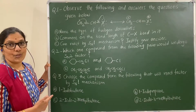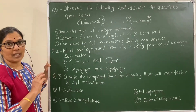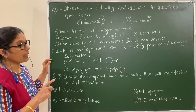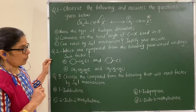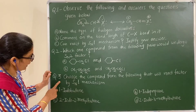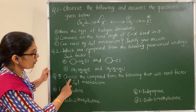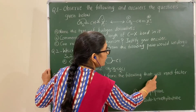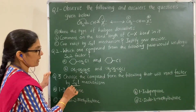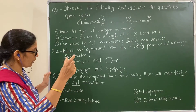Now let us see question answers from the textbook exercise on reaction mechanism. Question 3 — multiple choice: choose the compound that will react faster by SN1. SN1 faster means find the tertiary alkyl halide. Let us examine each option.